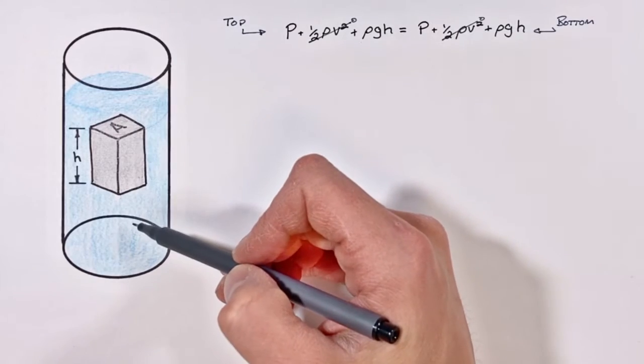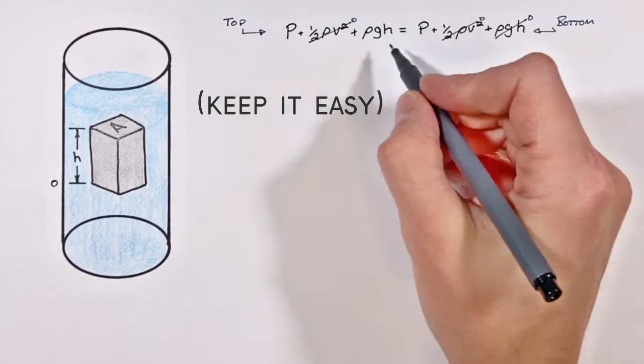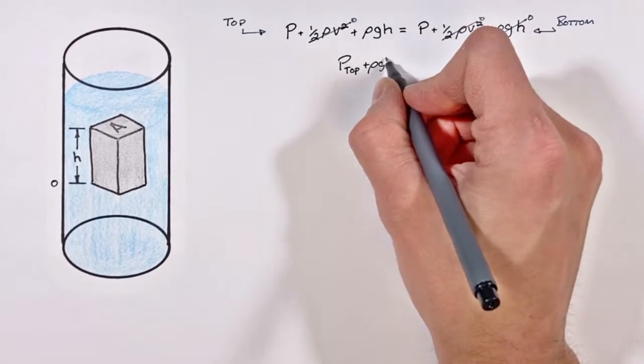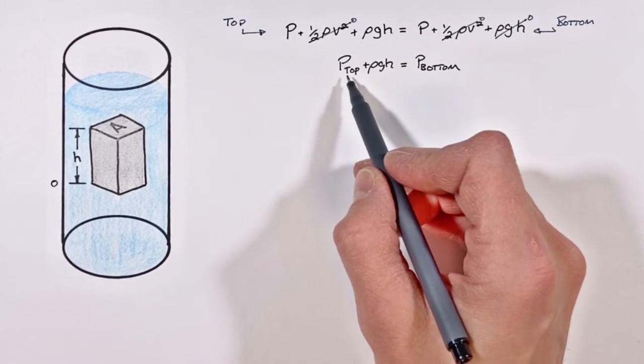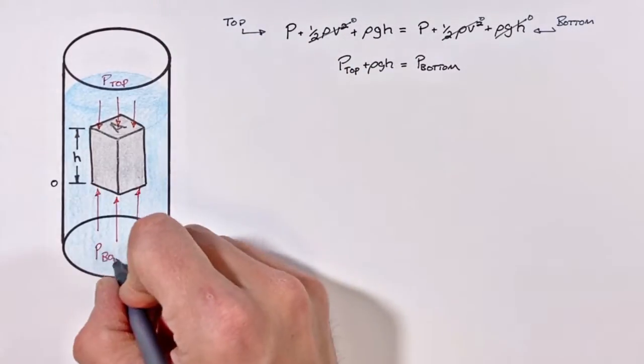The easiest thing to do though is to say that the bottom of the block is at a height of zero. So what we're actually left with is this term which is going to relate the pressure against the top of the block to the pressure against the bottom of the block.